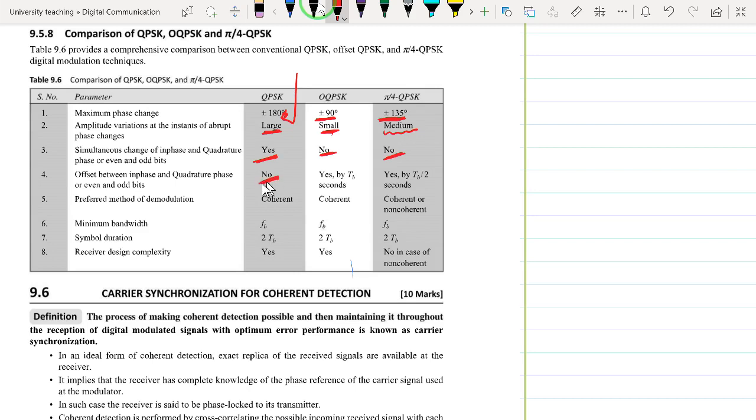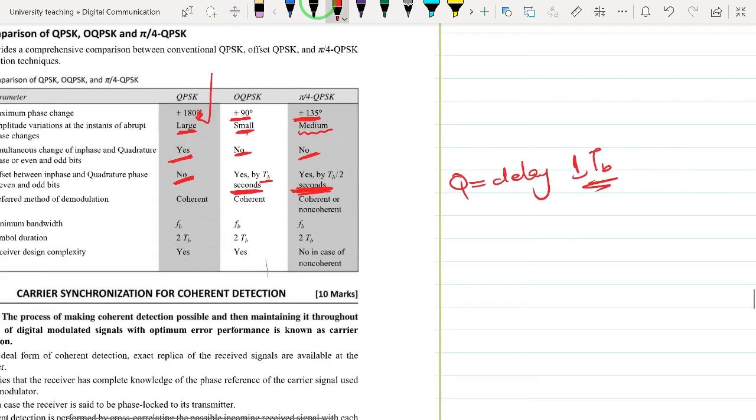We have also seen that is the same with π/4 QPSK. There is no offset for normal QPSK, and OQPSK has a delay of TB seconds. If you remember, the quadrature component of the OQPSK bitstream is delayed by 1 TB, and that is what allows us to avoid the simultaneous changes in phase of both in-phase and quadrature.